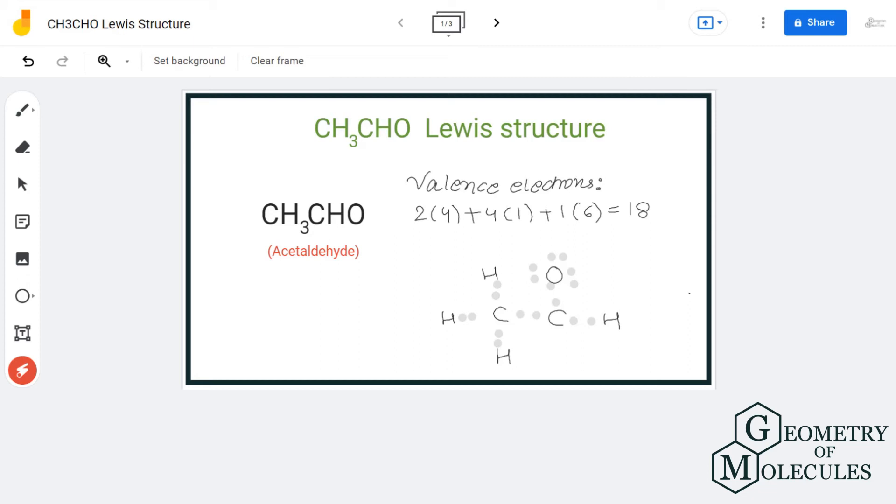To help this carbon atom have a complete octet, we will shift a pair of electrons from the oxygen atom, which will result in the formation of a double bond between this carbon and oxygen atom. That is fine because it is helping this carbon atom complete an octet.